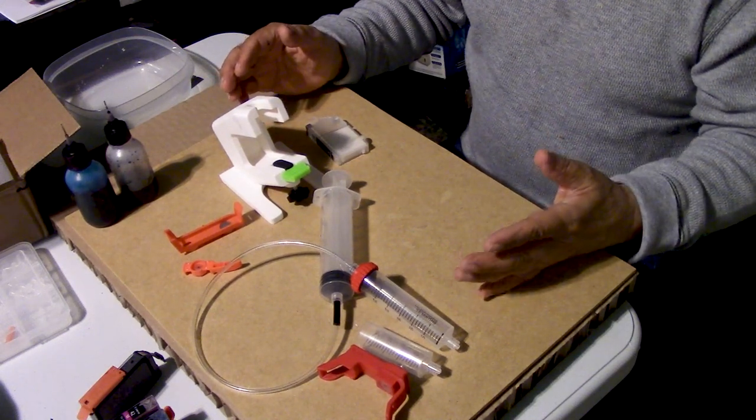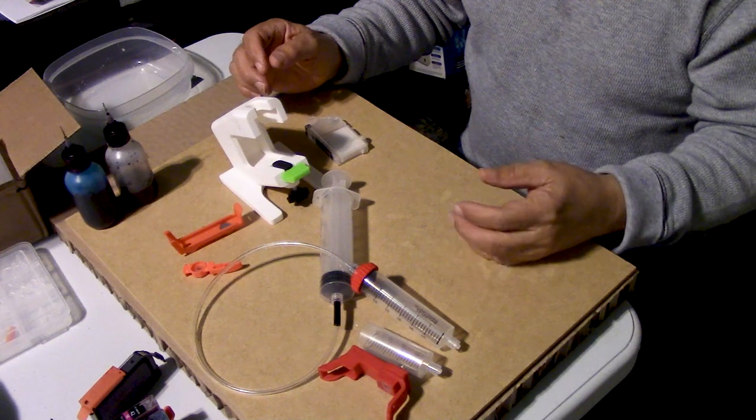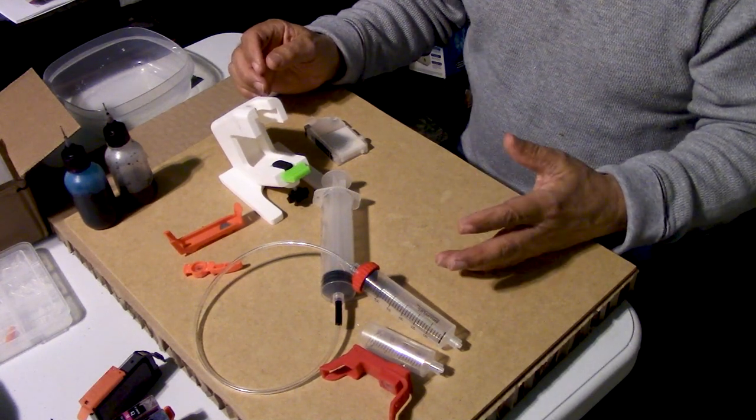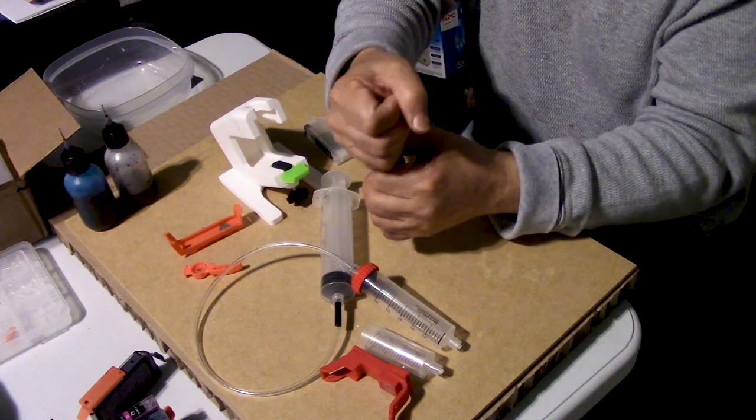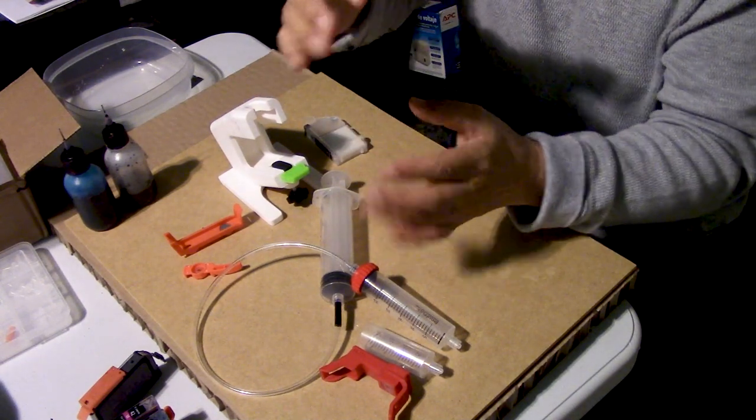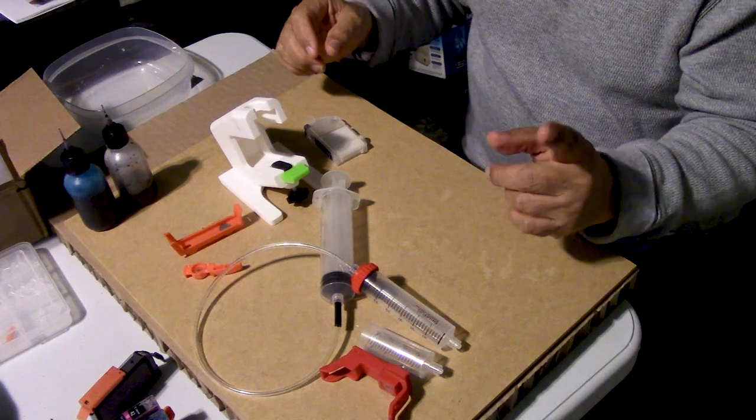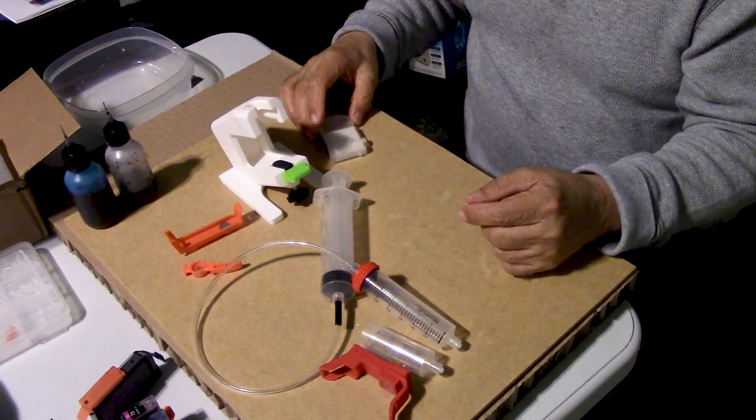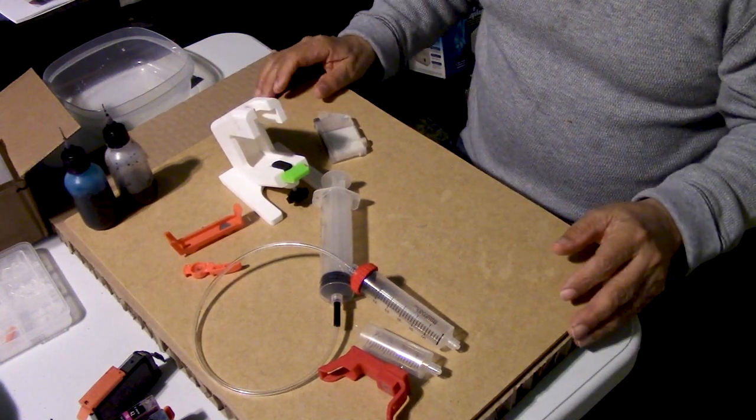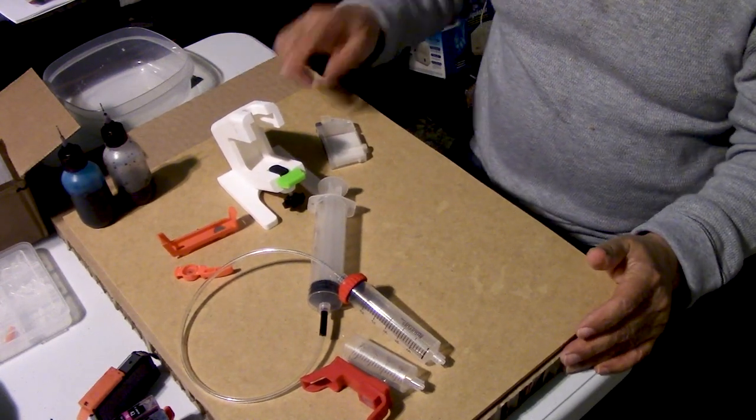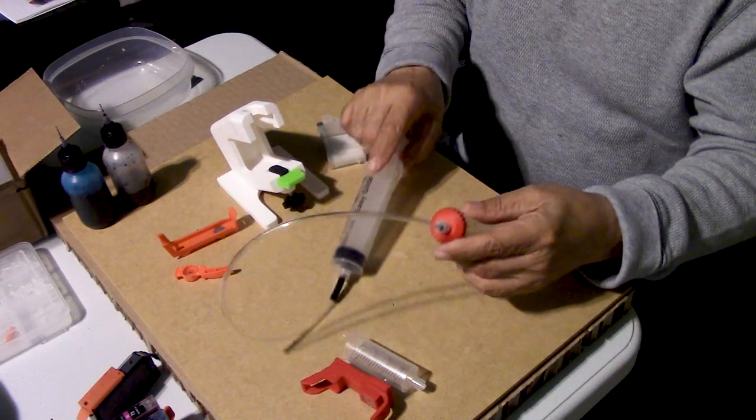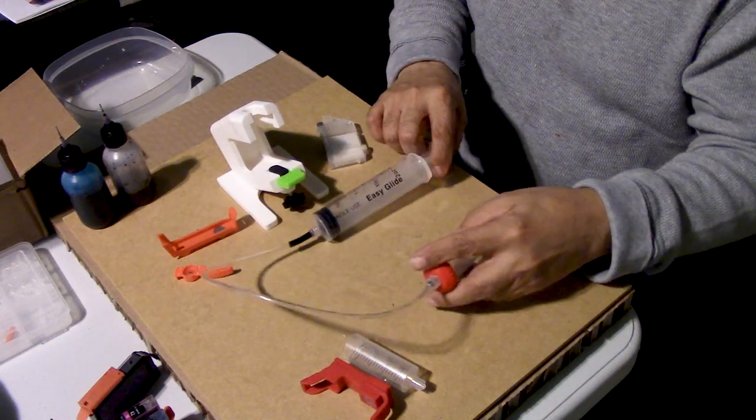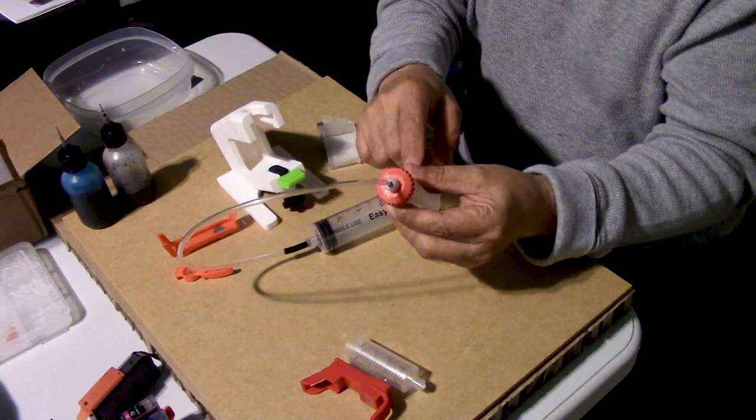Basically it did the same thing. It applied a seal over the existing vent and then had a luer lock port at the bottom for you to inject ink. You turn the cartridge upside down, you pull back on the plunger, you let go, and it would actually only fill the liquid port about three quarters full. So it wasn't as effective as this method is.